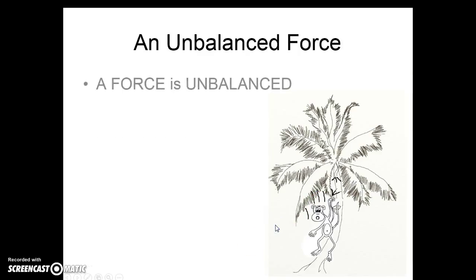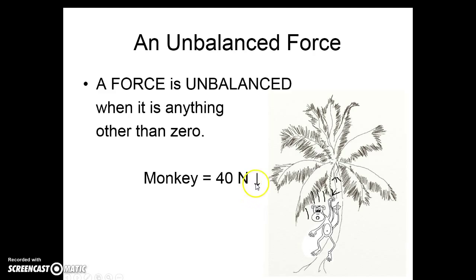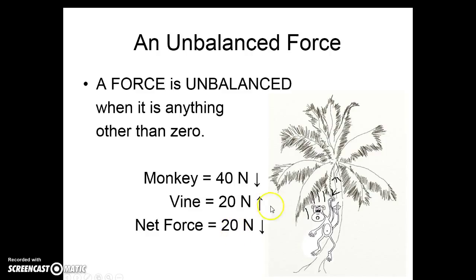Here is an example of an unbalanced force — it's anything other than zero. The monkey is still applying a force to the vine of 40 newtons down, but this is a puny vine that can only resist with 20 newtons up. When we subtract, we find out that the net force is 20 newtons down. That is an unbalanced force. The monkey is destined to fall out of the tree. Poor little monkey.